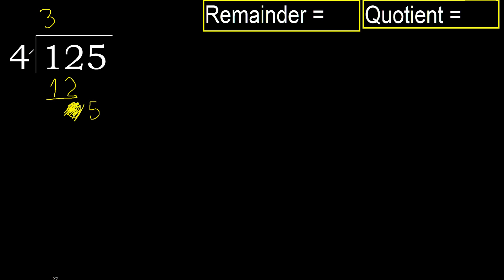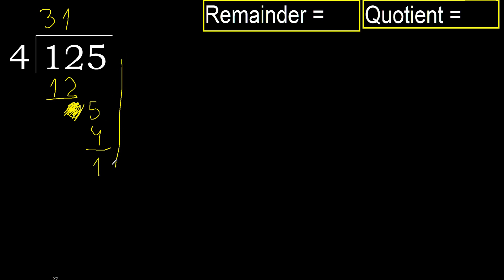Now we have 5. 4 multiplied by 2 is 8 — 8 is greater. 4 multiplied by 1 is 4 — it is not greater. Subtract. Next, there is no more number, therefore we finish it.